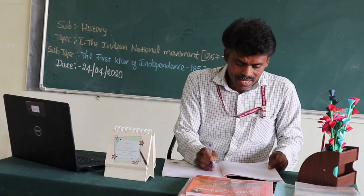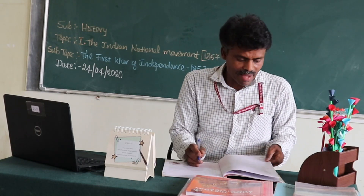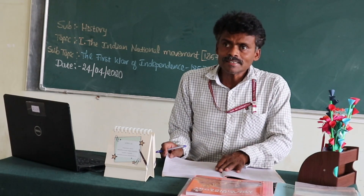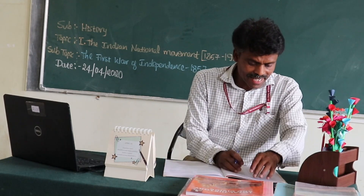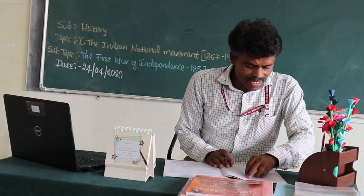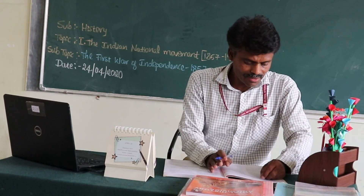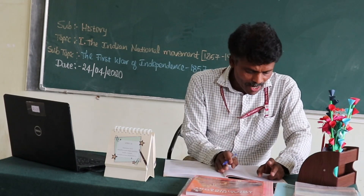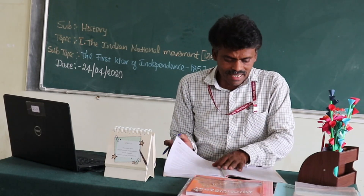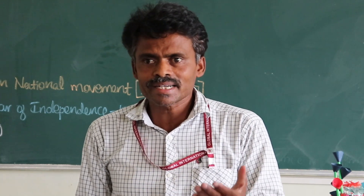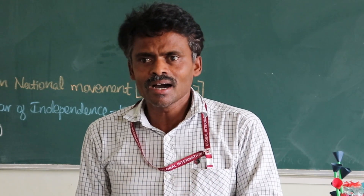The thirty-second and final question: Mention any two drawbacks of the First War of Independence. Come to page number 20, extreme right side, serial number 2. Write two Roman numeral points: point one — 'The movement did not have...' and point two — 'The movement had no common goal.' These two points are enough since only two drawbacks are asked. Children, these are the notes for the First War of Independence 1857. Preserve your notes properly — they will be checked. Please subscribe to Global International Online Classes. Thank you.